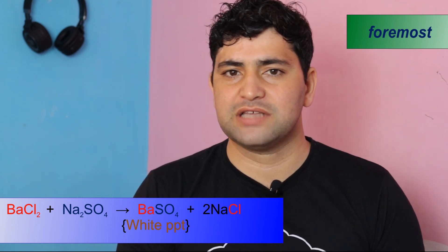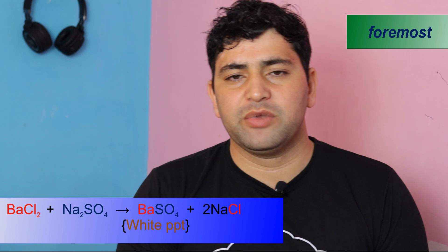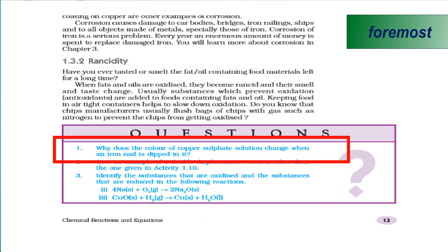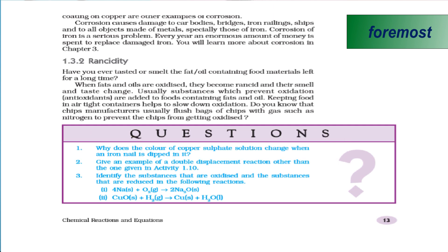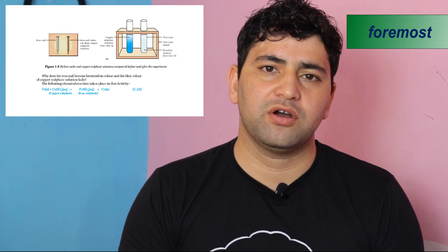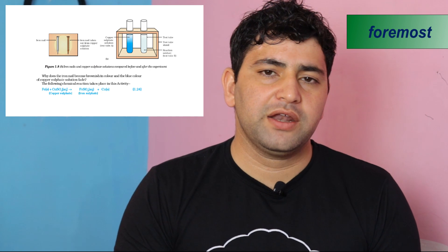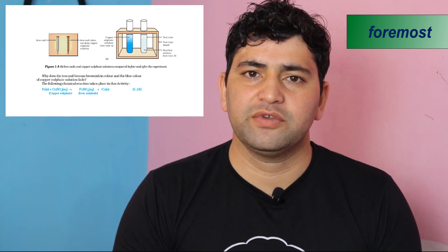In this reaction, you can see there is exchange of ions — sodium is replacing the position of barium, and barium is replacing the position of sodium. Now, an important question from page number 13: Why does the color of copper sulfate solution change when an iron nail is dipped in it? This is already discussed in the displacement reaction activity — iron is replacing the position of copper, and therefore it changes the color.